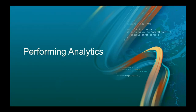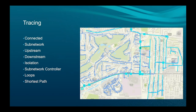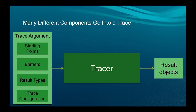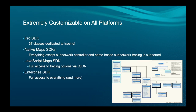Analytics — good old-fashioned tracing. We support a number of different traces in the utility network. If you've ever pulled up the tracing geoprocessing tool, you know there are a ton of different options, and there are basically classes to go along with each of those options — the big one being the trace configuration class. One interesting thing about all the APIs is there are different result types you can pass in and get different kinds of results back. It's entirely customizable on all platforms.